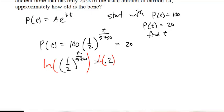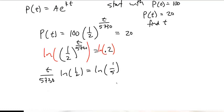Why the natural log? Because you can pull the exponent out front: (t/5730) × ln(1/2) = ln(1/5), since I'll call 0.2 as 1/5.